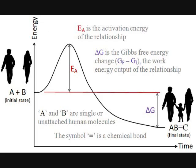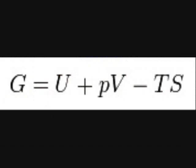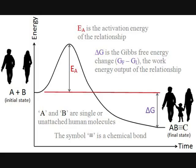The Gibbs free energy itself is a function of internal energy, pressure-volume energy, and entropic energy. The single reactants, A and B, and the family unit, ABC, are each single molecules, respectively.